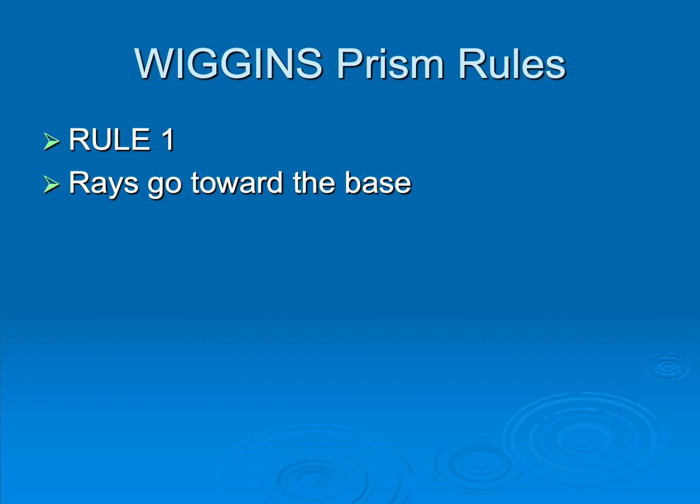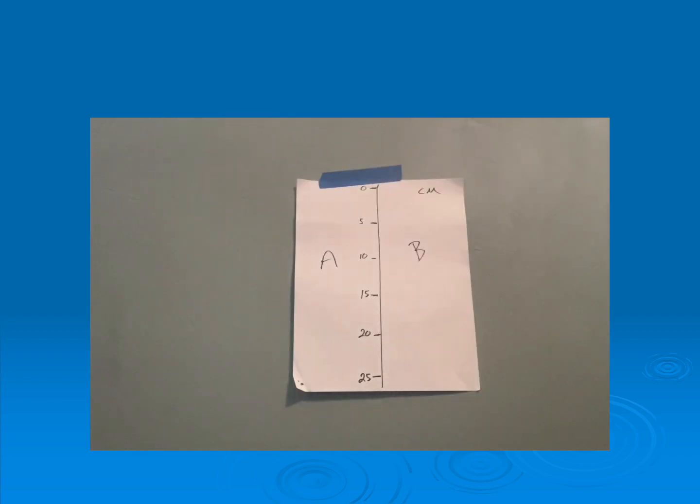To help you understand prisms in more depth, we have some prism rules here that are really going to be clinically useful, which I've modestly named Wiggins prism rules. Rule number one is that the rays will always bend towards the base. Let me show you what I'm talking about. Once again, we have our target here, but you can see I've added an A and a B to it. We're going to test the validity of prism rule number one that the rays bend towards the base. To do that, I'm going to take our trusty 20 prism-diopter prism.